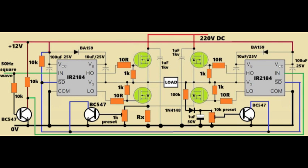IC IR2184, which is switching the IC output on and off according to the 50 Hz square wave signal. That 50 Hz signal is coming from some oscillator, maybe from Arduino or IC555 or anything similar.